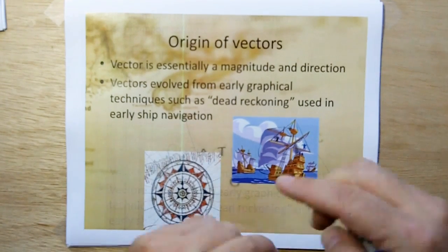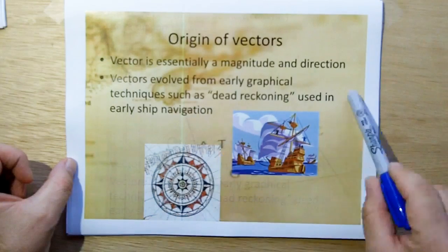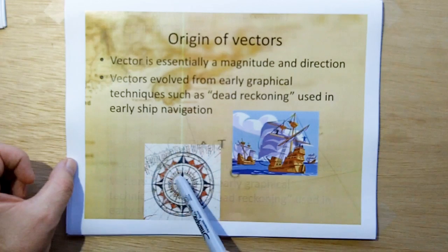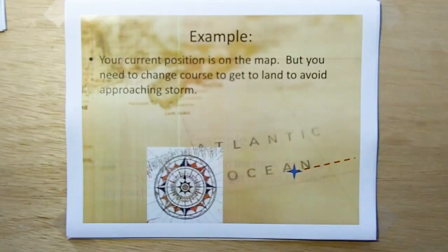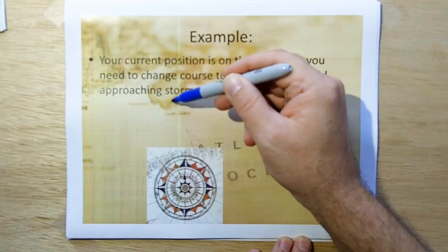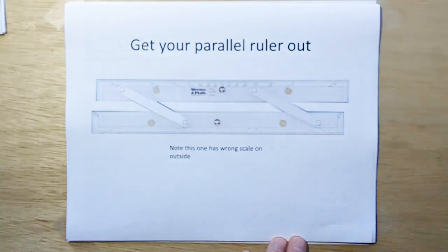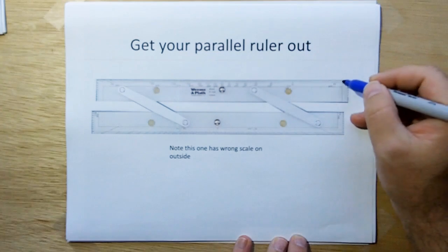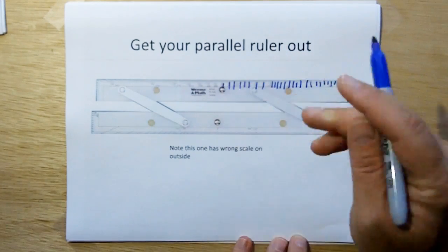Vectors evolved from early graphical techniques such as dead reckoning, which is actually the term used in early ship navigation. This is a blurry map that I got from clip art. I put a little wind rose on it. Most people think these are decoration. I'm going to show you that these actually have a critical part. This makes the map actually useful. Let's assume you're a ship at sea, and you know your position is here, and there's a storm coming, and you need to get into port over here in this blurry part of the map. So how do you get there? What you need is a parallel ruler. This has angular measurements on the outside. We need one that's got linear distance gradients on the outside.